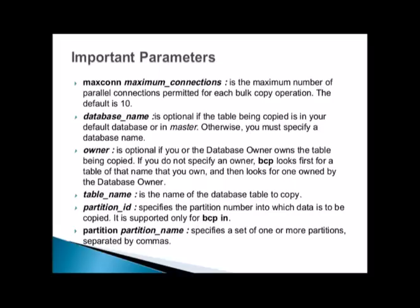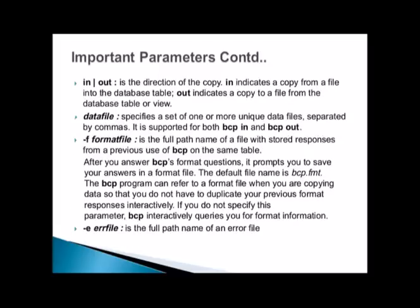Max connections is the maximum number of parallel connections permitted for each bulk copy operation. The database name is self-explanatory. Owner is optional — if you don't specify it, BCP will look first for the table you own, then for one owned by the database owner. 'in' indicates copying from a file into the database table; 'out' indicates copying to a file from the database table or view.